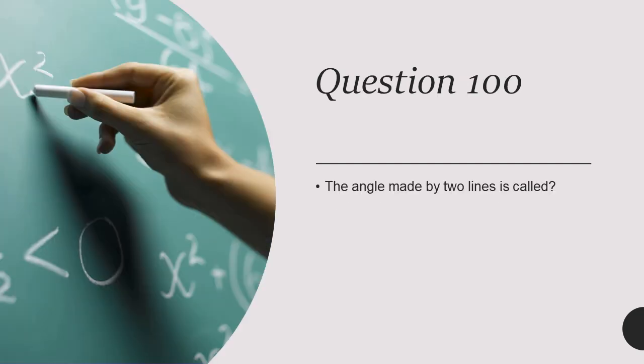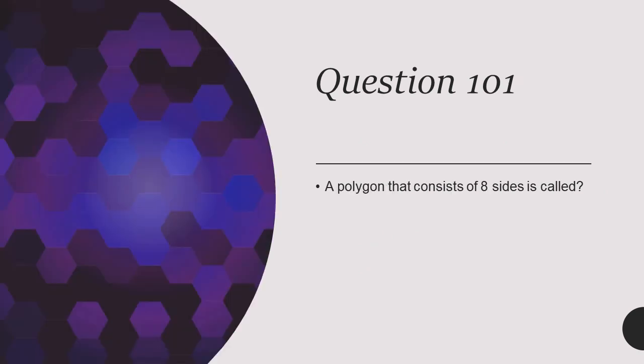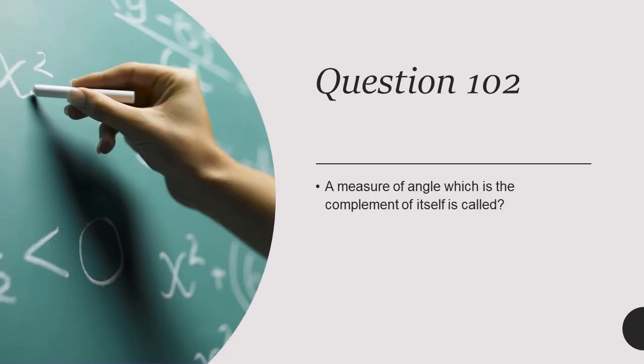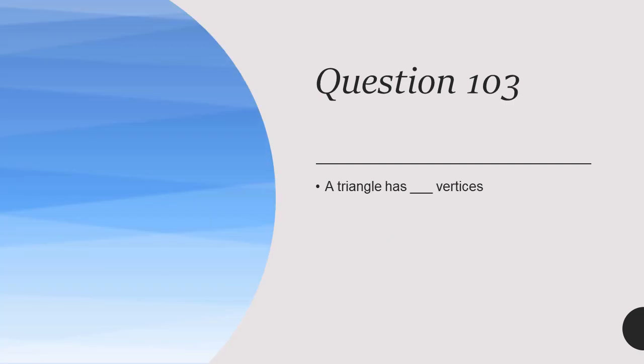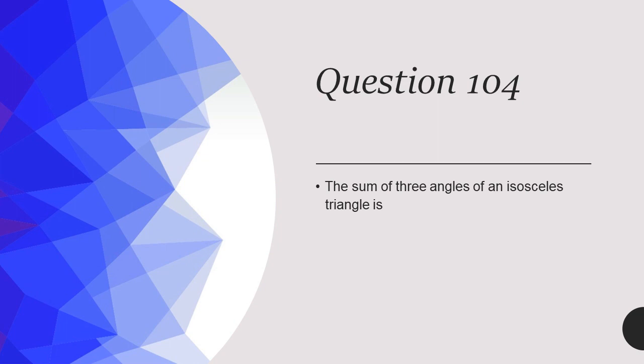Question 100: The angle made by two lines is called vertex. Question 101: A polygon that consists of eight sides is called octagon. Question 102: A measure of angle which is the complement of itself is called 45 degree angle. Question 103: A triangle has dash vertices.